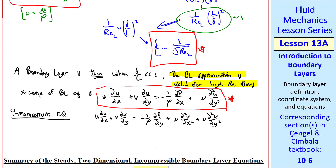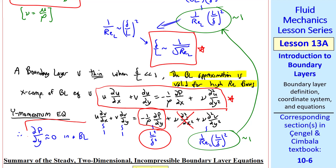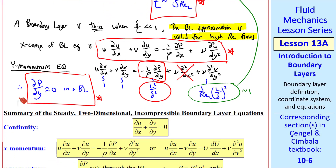Now consider the y-momentum equation. After order of magnitude analysis, the first two terms are order of magnitude 1 and the last viscous term is also order 1, as in the x-momentum equation. However, the pressure term is order L squared over delta squared, which is huge compared to 1. There is nothing in the equation to balance this pressure term. The only resolution is that del p del y must be approximately zero in a boundary layer. This is our final boundary layer equation from the y-momentum equation.